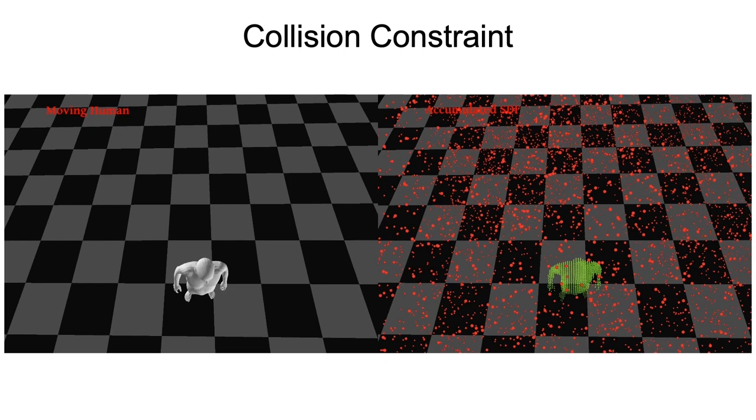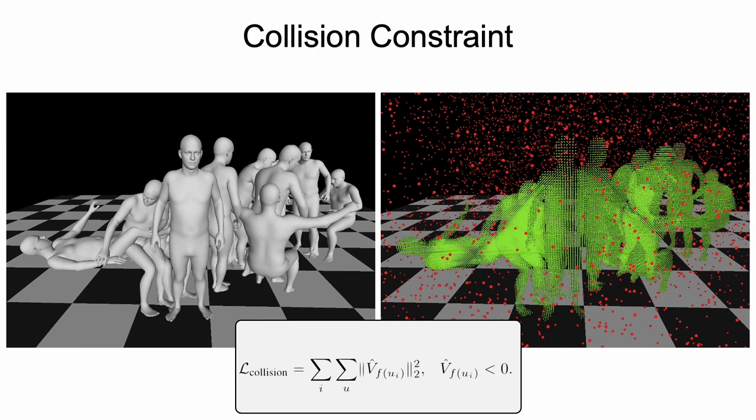Second, collision constraint. Humans move through free space and do not inter-penetrate objects. We use the signed distance field of all reconstructed bodies to penalize all inter-penetrating vertices of objects and bodies.